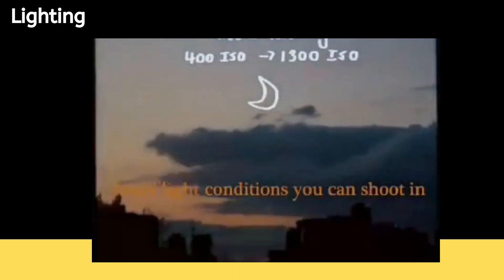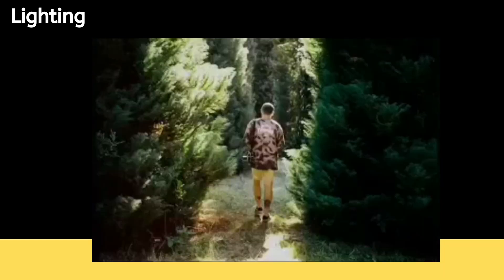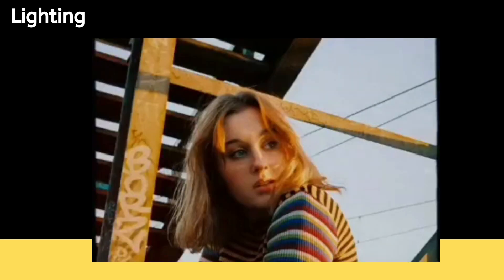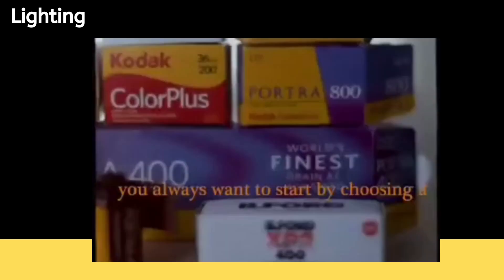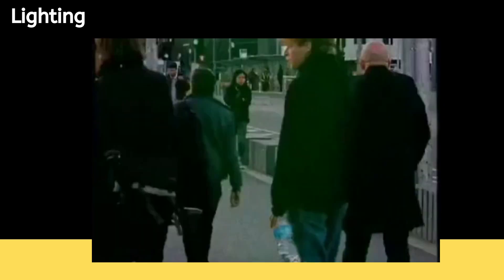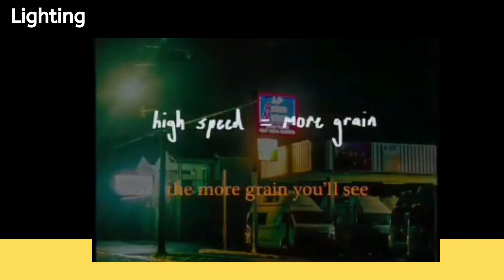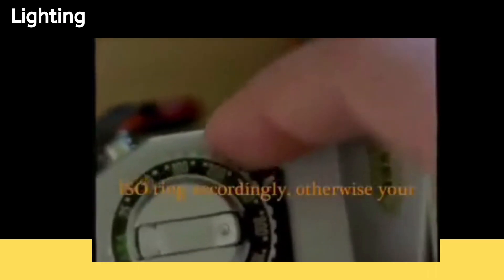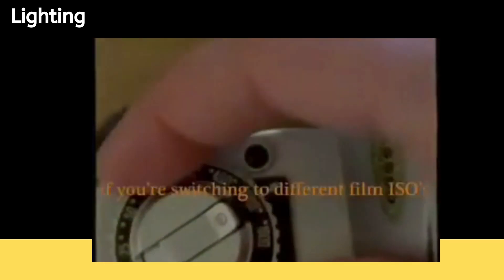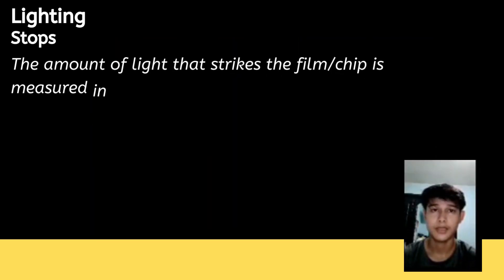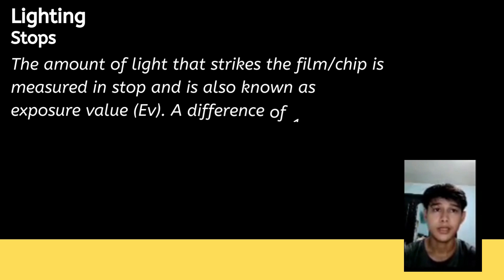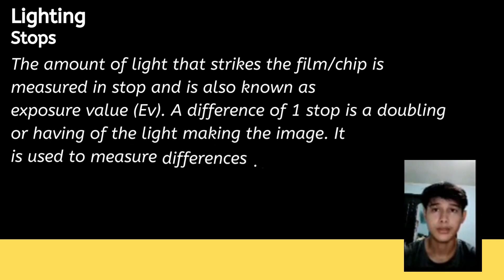For example, use ISO 100 for bright sunlight, 400 as a great all-rounder, and 800 for dusk and night. You always want to start by choosing a film that matches your planned light conditions and outcome. Lower speed films have a finer grain, and the higher the speed, the more grain you'll see. Always remember to set your ISO ring accordingly, otherwise your camera won't meter your light correctly.